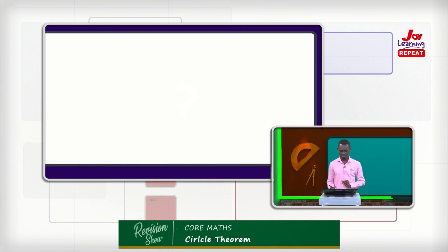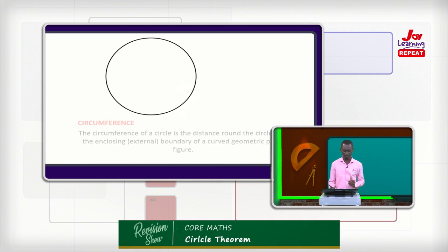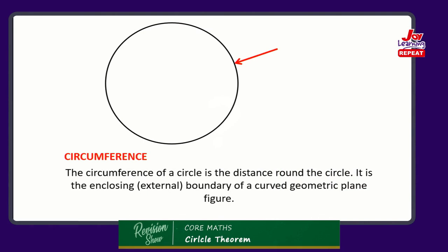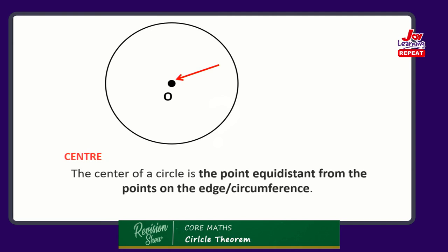Let's talk about the circumference. The circumference is the distance around the circle - it is the external boundary enclosing that geometrical figure. The center is that point that is equidistant from all points on the circumference.